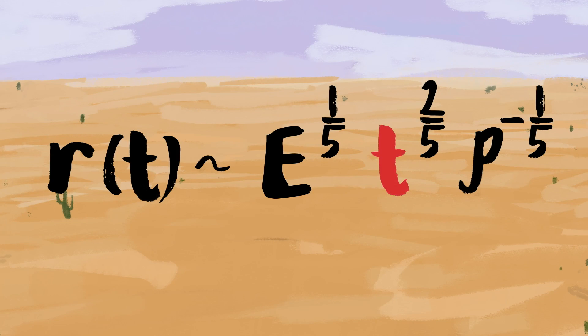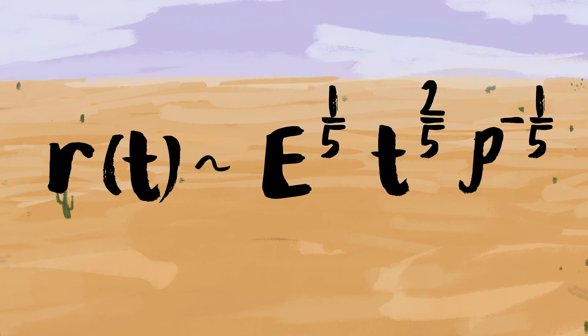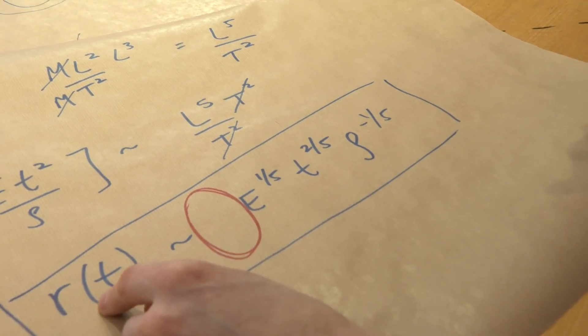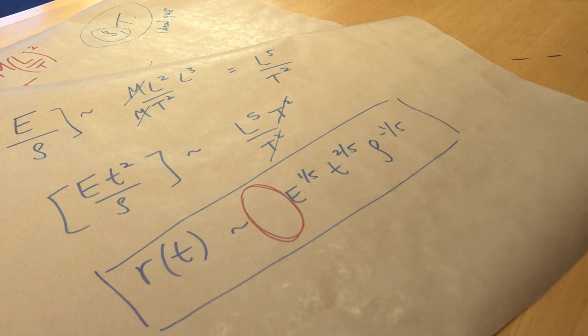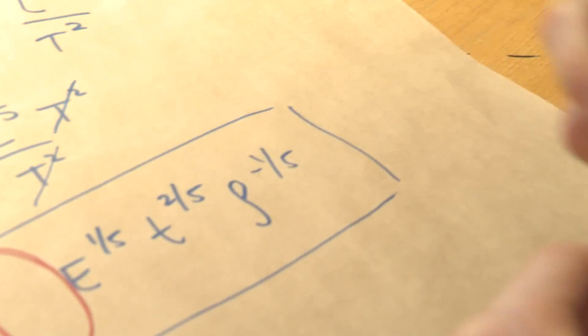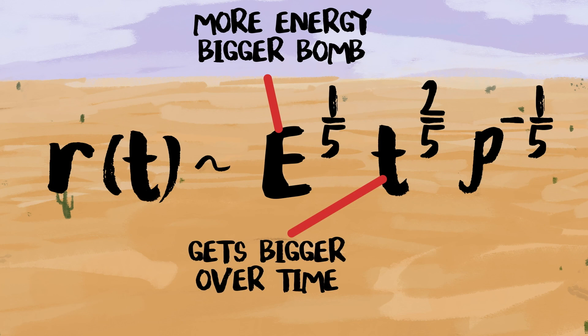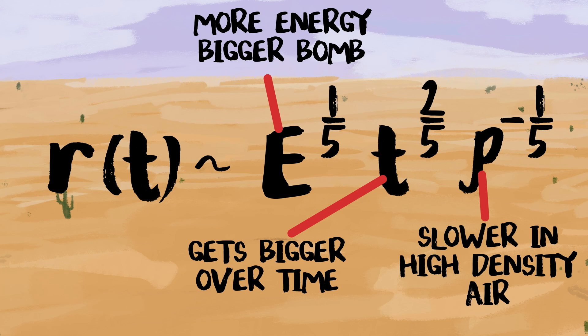As you increase energy the radius increases, but the one-fifth power means you really have to ramp up the energy to get a large radius. And because density has a negative power — it's in the denominator — as density gets higher, the radius decreases. There's always a good sanity check: if energy goes up you expect a bigger blast; if you wait longer you expect a bigger radius; and if you increase the density of the air — imagine more water in the air, it's thicker — it's harder for the explosion to move through, so you'd expect the radius to shrink. It all makes physical sense.